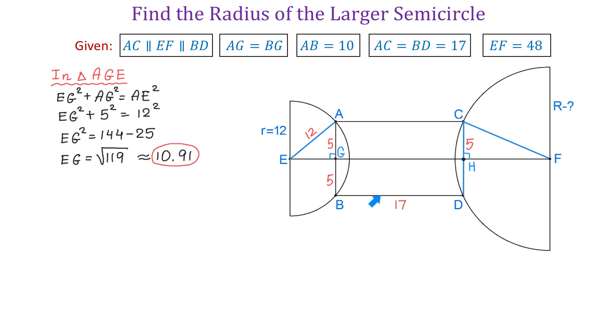Now, in the figure, if BD is 17 units, then GH is also 17 units. So EG is 10.91, GH is 17. And now to find HF, we will subtract these two lengths from 48. So HF equals EF minus EG and minus GH. Then HF equals 48 minus 10.91 and minus 17. Then HF equals 20.09.